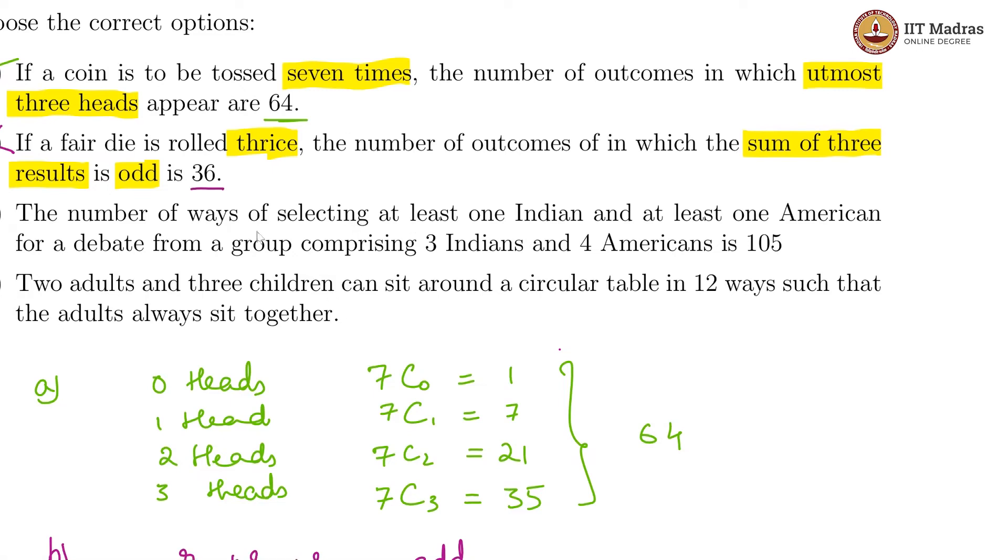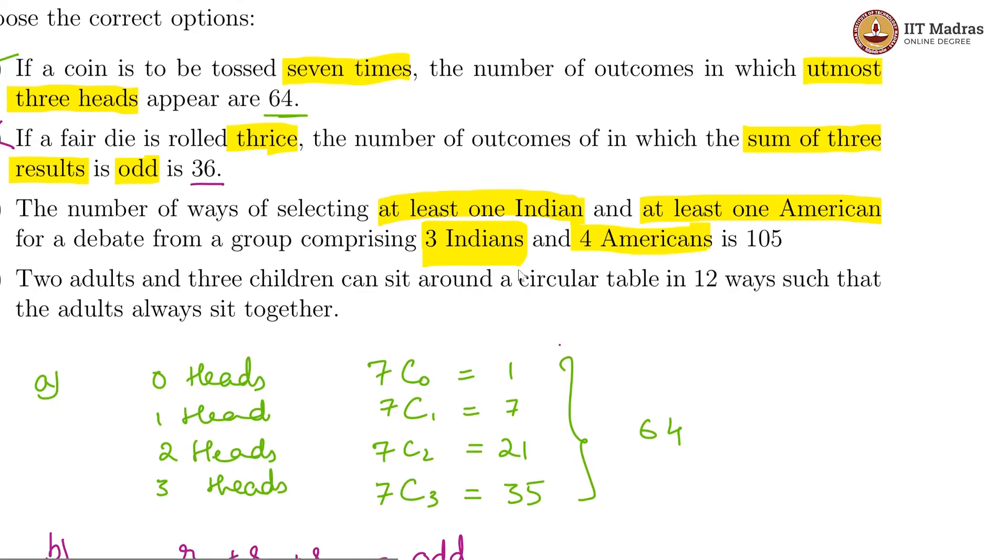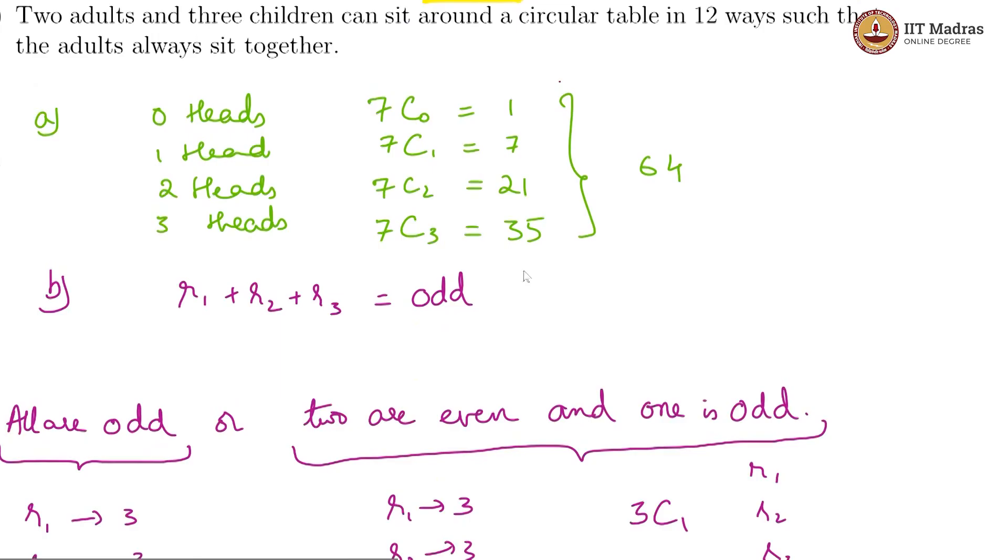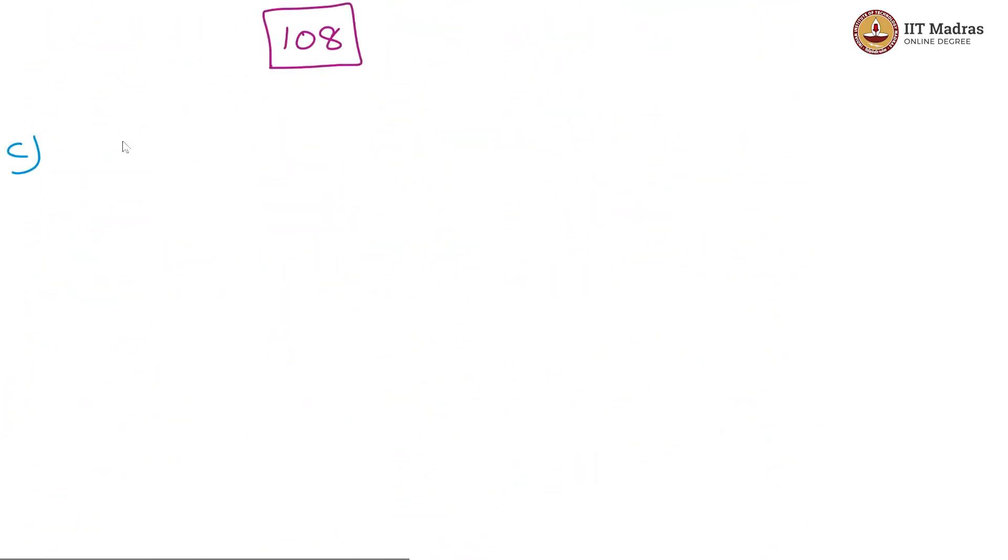Going further, the number of ways of selecting at least one Indian and at least one American for a debate from a group comprising of three Indians and four Americans is 105. So, we have at least one Indian and at least one American. Now, the problem does not say how many people need to be selected. So, presumably, you can choose any number.